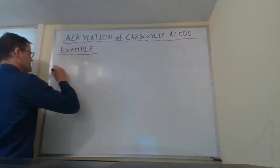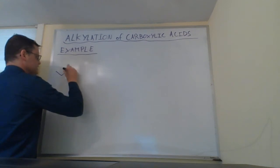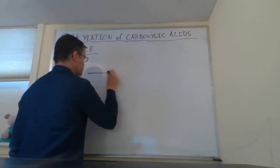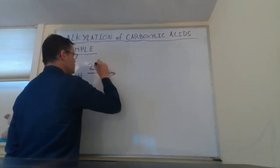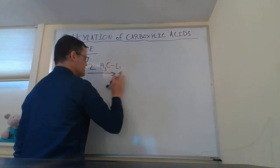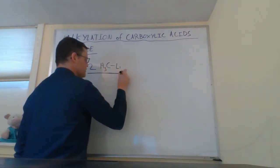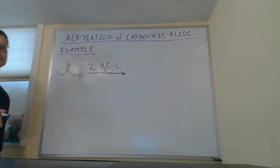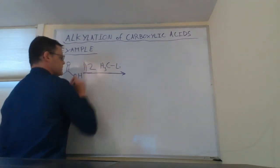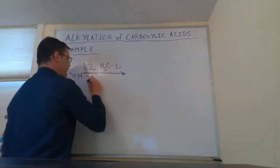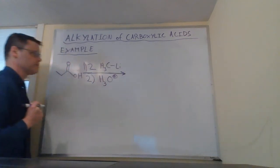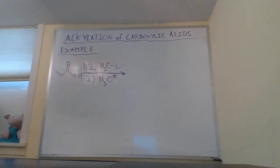In this example, I'm going to take propionic acid — a three-carbon carboxylic acid — and we're going to react it with two equivalents of methyl lithium. It's important that we're using two equivalents because each equivalent is going to be doing something different. Then the second step is going to be a workup with H3O+.